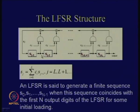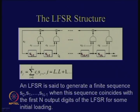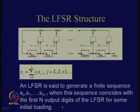This is a recap of the LFSR structure. You have S_{j-1} to S_{j-L}, with L flip-flops or storage elements. The corresponding feedback S_j is obtained as a linear combination of these points, depending upon a control bit, so there are also L control bits. The LFSR is said to generate a finite sequence S_0, S_1 to S_{n-1} when this sequence coincides with the first n output digits of the LFSR.